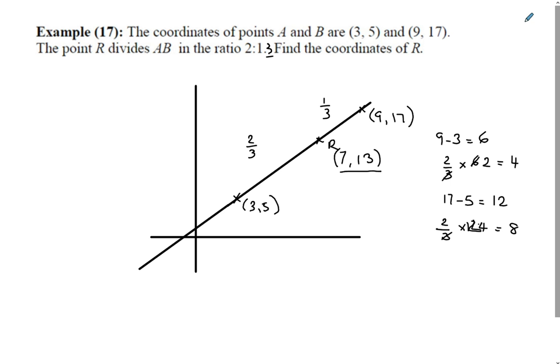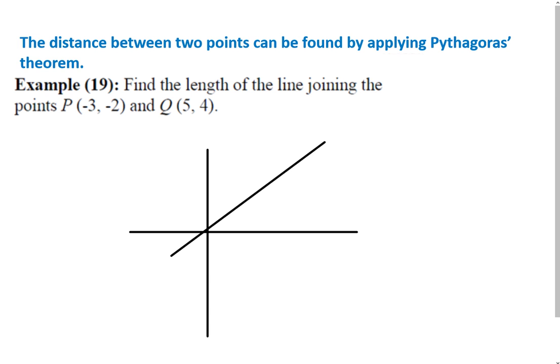Let's try to find the distance between two points. Now, the distance between two points can be found by applying Pythagoras' theorem. When we do the triangle to find the gradient, if you draw the triangle, you actually get a right-angled triangle. So let's have a look.